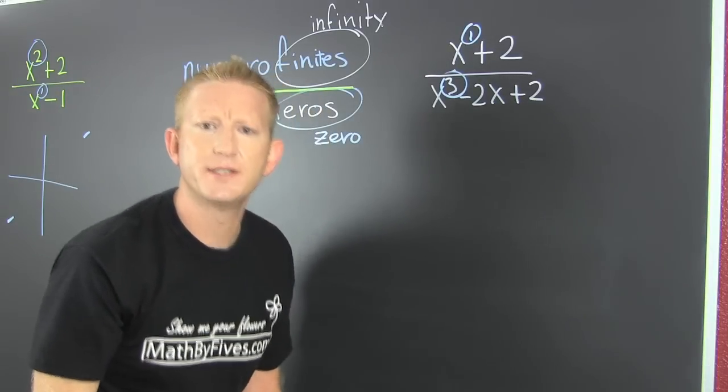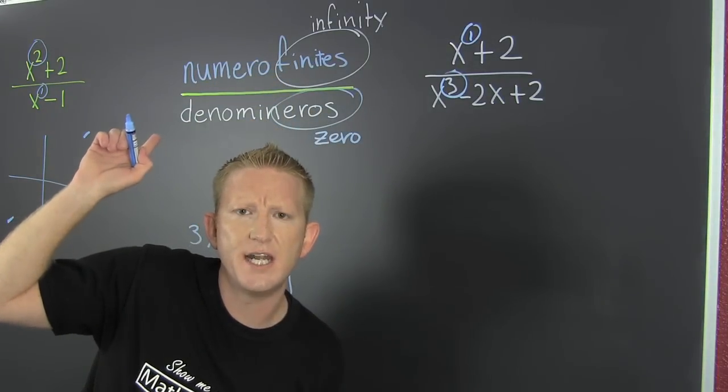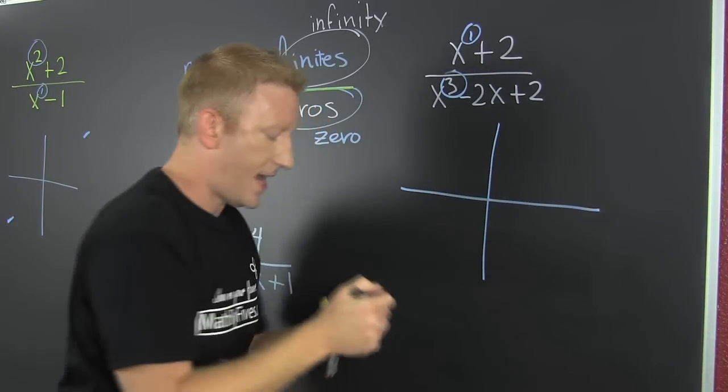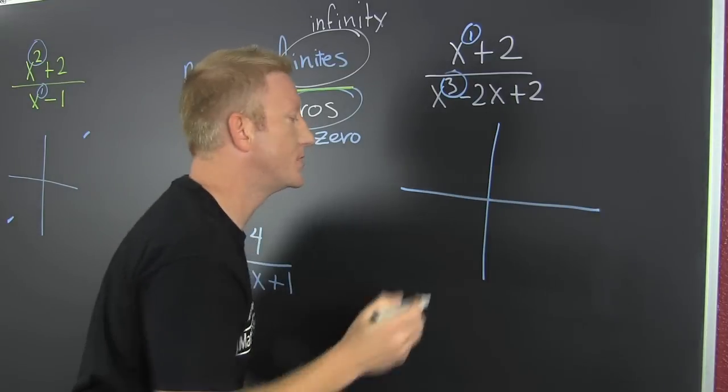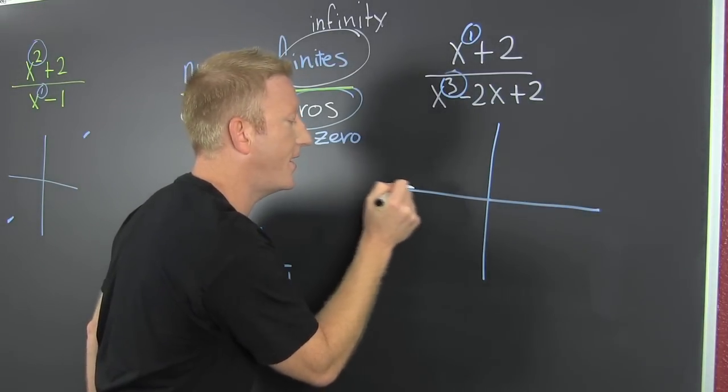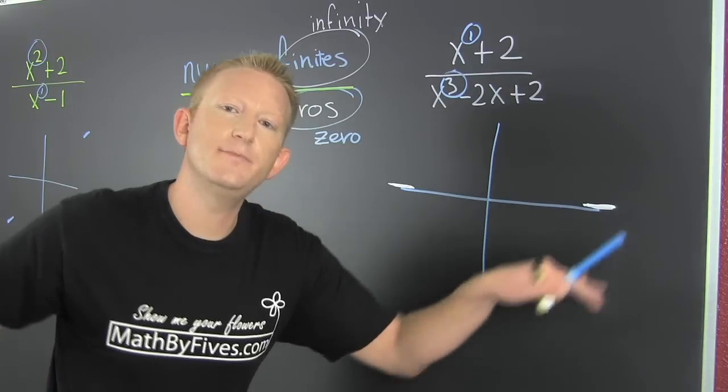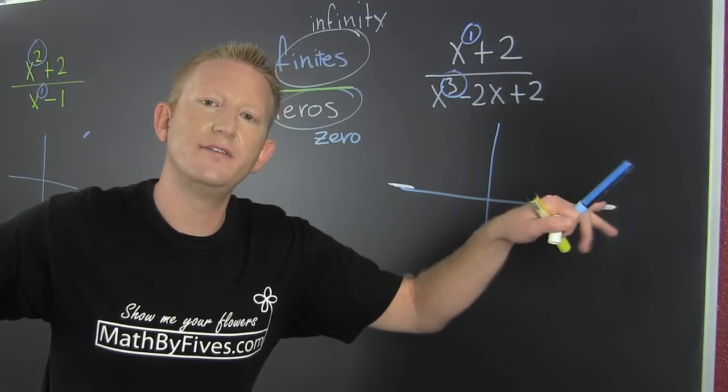This is our all-in moment. Who wins? The numero finis or the denomineros? The denomineros. So the horizontal asymptote is at zero. That's gonna be the end behavior at large and small values of infinity.